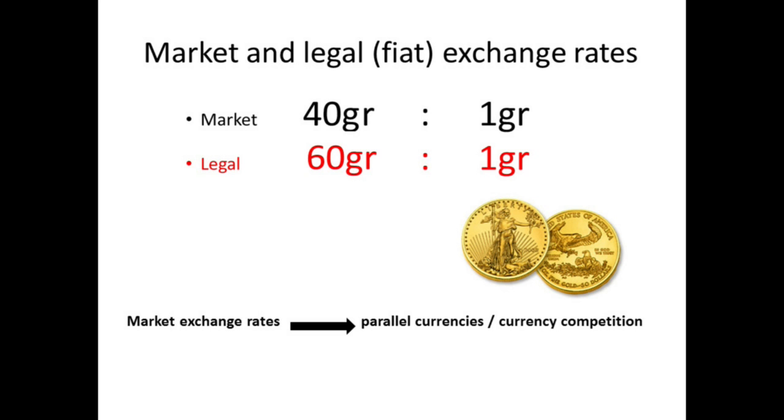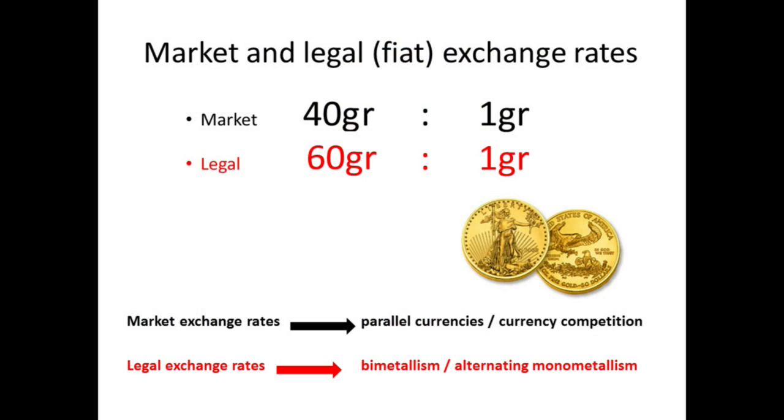So we see that only in the precise case where the fiat exchange rate is identical to the market exchange rate will it not affect the market at all. In all other cases, such a system — defining a fixed exchange rate between two commodity monies, called bimetallism in the case of gold and silver — will result in either silver or gold dominating the market. So legal exchange rates create a system of bimetallism that in practice means alternating monometallism.